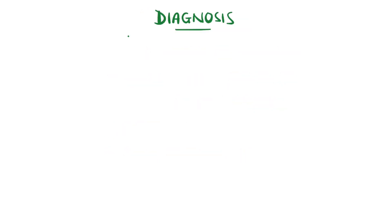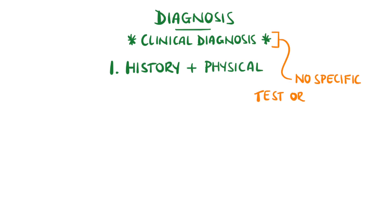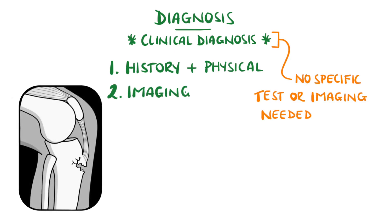A diagnosis is made clinically, meaning the history and physical exam are enough and no specific test or imaging are required. However, a knee x-ray can show fragmentation of the tibial tubercle, and ultrasound can show cartilage injury at an early stage.